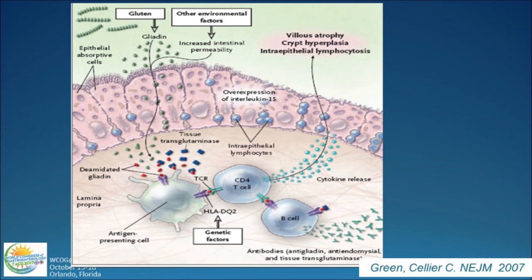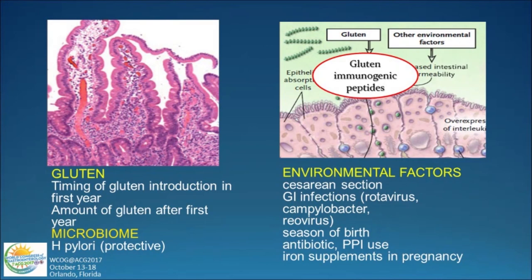This is a diagram of the pathophysiology of the development of celiac disease, and I'll go through each of these steps sequentially, because to understand the development of new therapies, one has to understand why we have celiac disease. We ingest gluten, but we didn't evolve to eat wheat or these grains, and our endopeptidases don't chop up the long sequences of amino acids present in these proteins. Instead, we're left with molecules that are about 33 amino acids long.